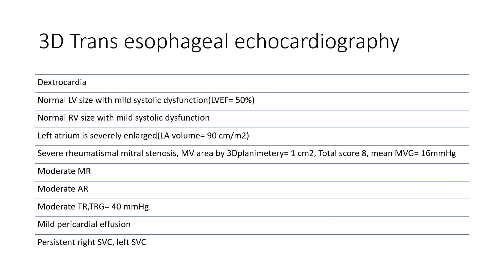Three-dimensional transesophageal echocardiography showed dextrocardia, normal LV with mild systolic dysfunction, normal RV with mild systolic dysfunction, left atrium enlarged, severe rheumatic mitral stenosis, moderate mitral regurgitation, moderate aortic regurgitation, moderate tricuspid regurgitation, mild pericardial effusion, and right and left superior vena cava.